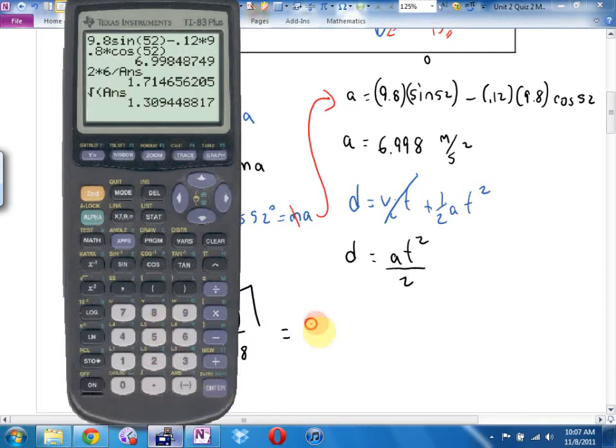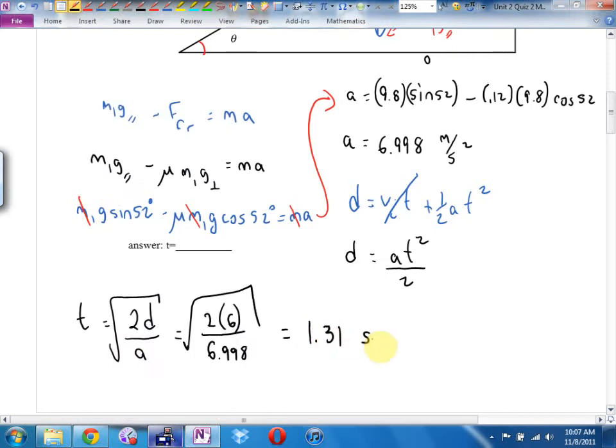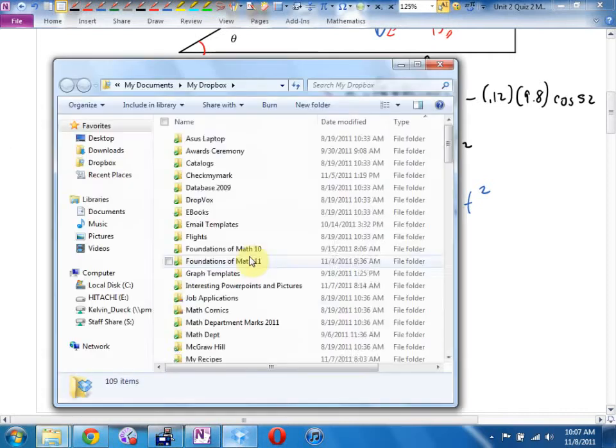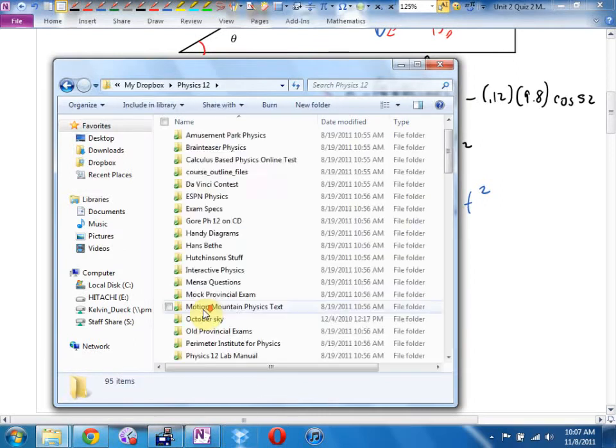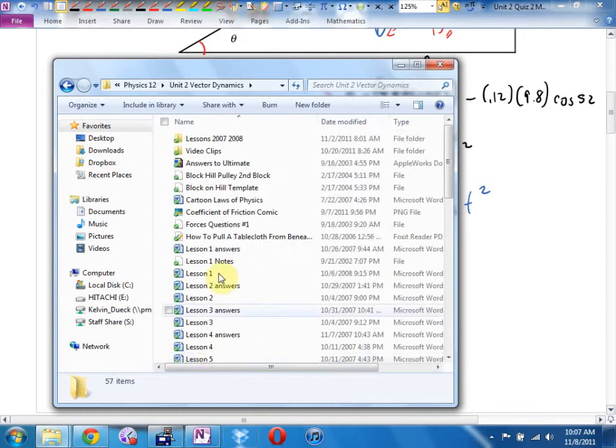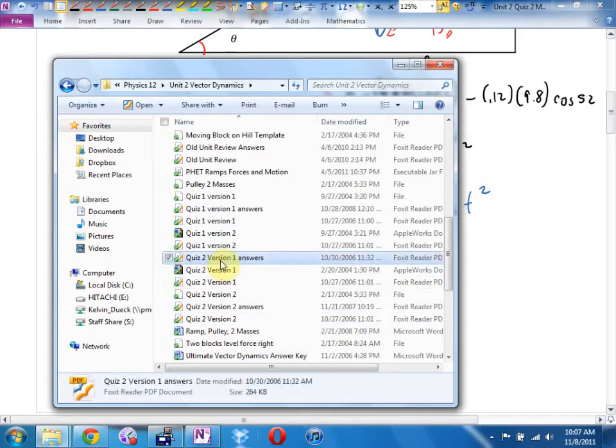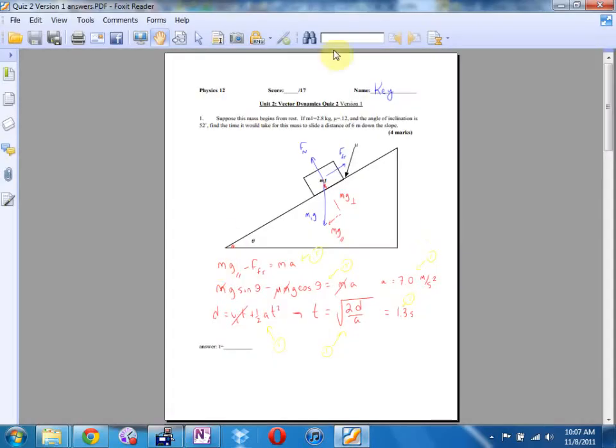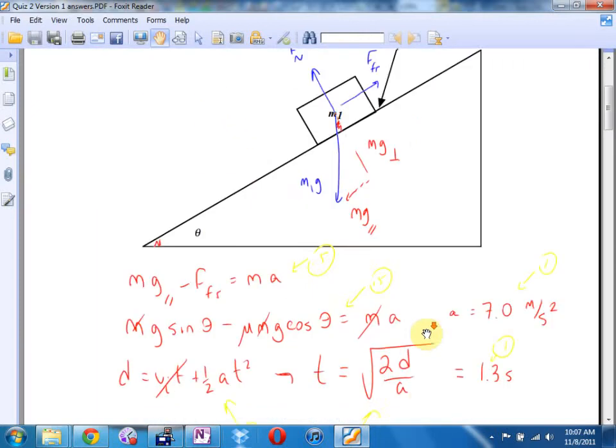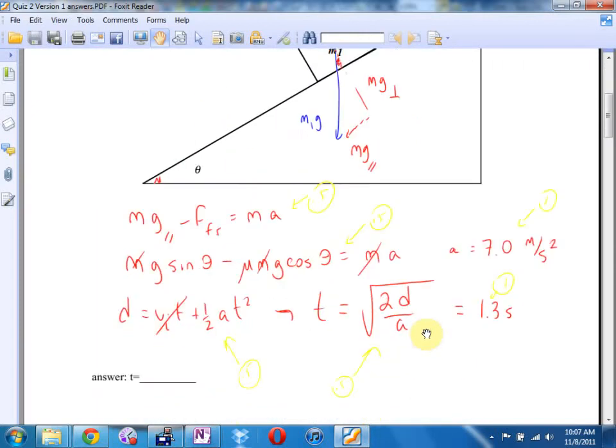Now I'd like to find t. I know that d equals v i t plus a half a t squared, but vi is 0, which means that d equals a t squared over 2. I think what this really means is that t equals 2 times d divided by a square root, which is going to be 2 times 6 divided by 6.998 square root. Do you guys get an answer of 1.31 seconds? People nodding. So that's for full marks.